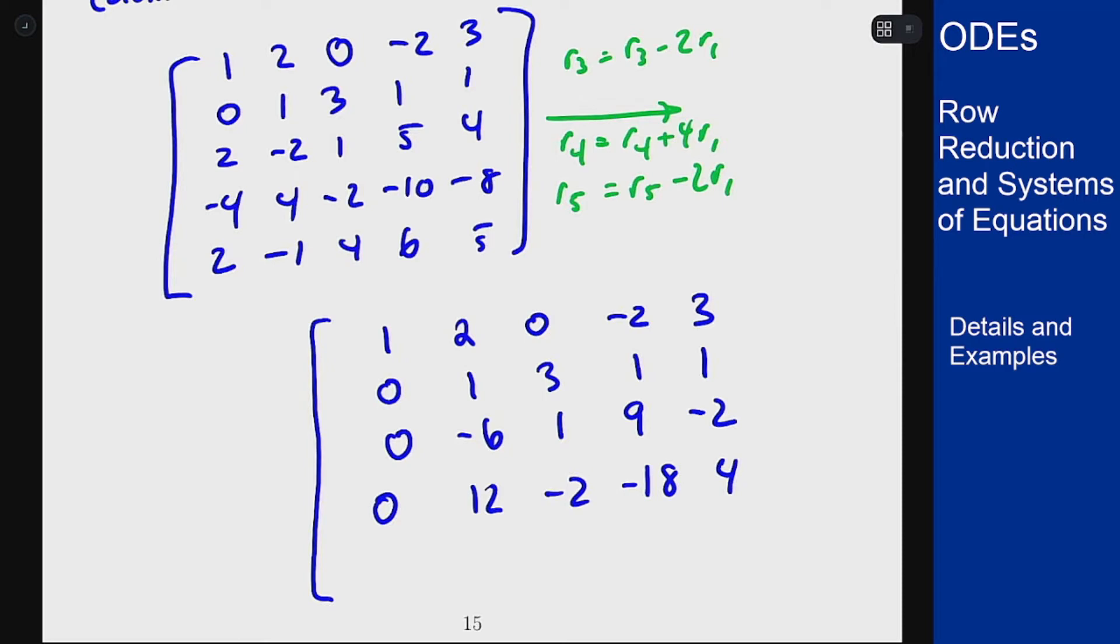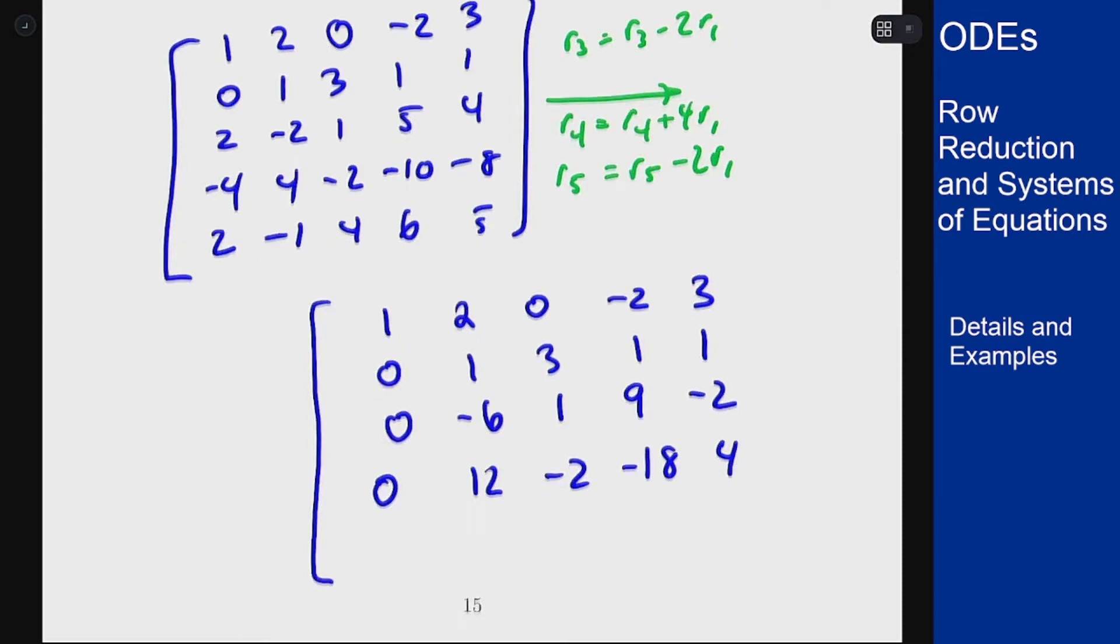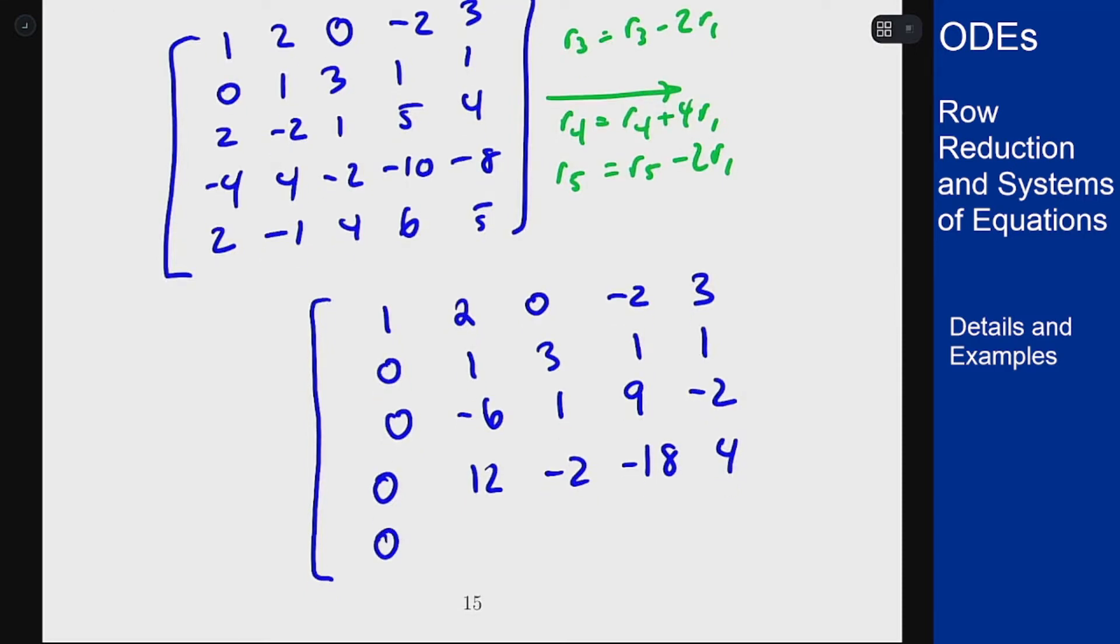For the last row I'm subtracting 2 copies of row 1 again. So I get 0 in the first spot as expected. Negative 1 minus twice the first row, or 2, is minus 5. The 4 stays where it is.